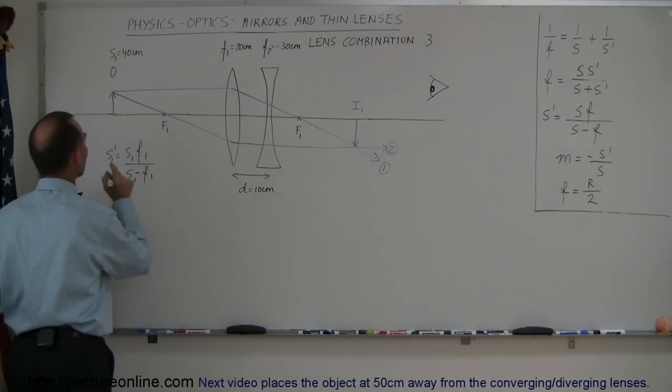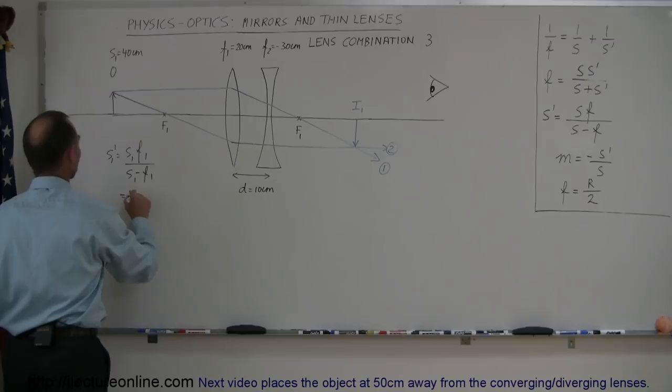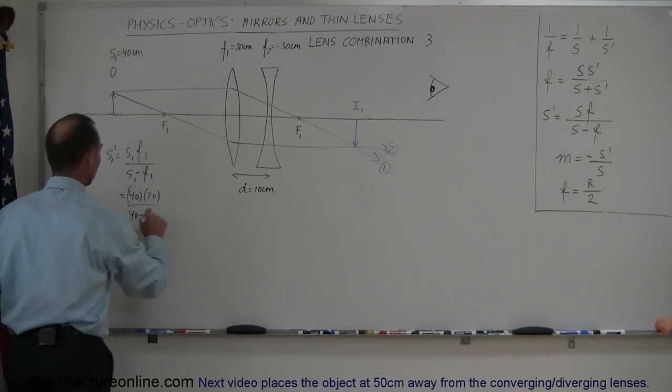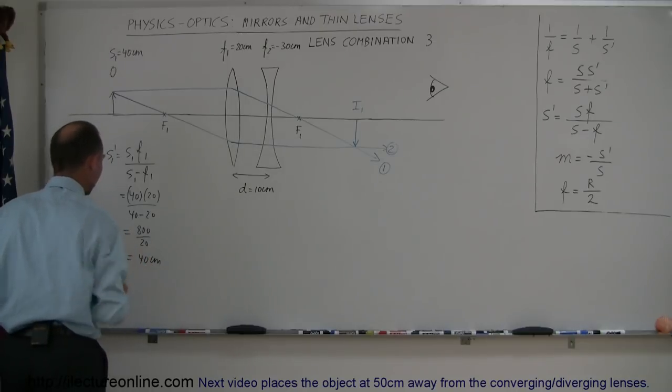Plug in the numbers: s1 we got 40 centimeters, f1 was a 20 centimeter lens, divided by 40 minus 20. So this is 800 divided by 20 which is 40 centimeters.